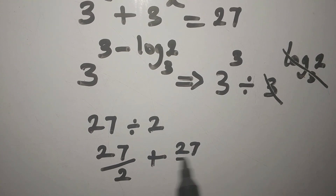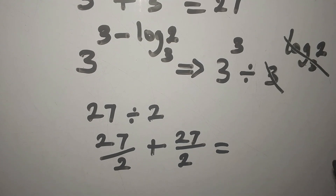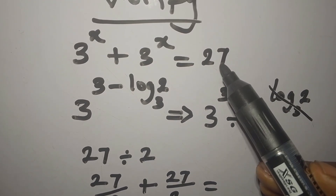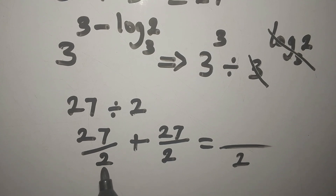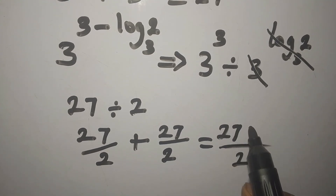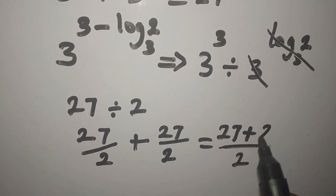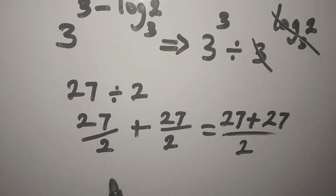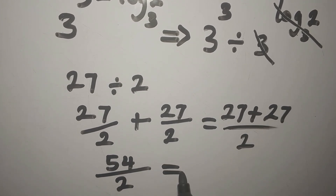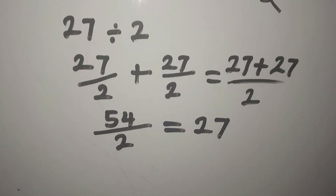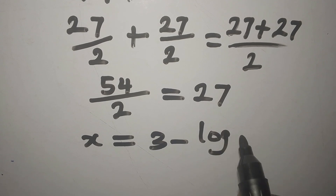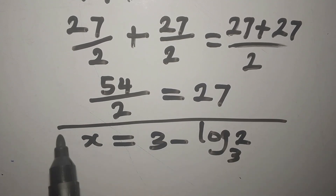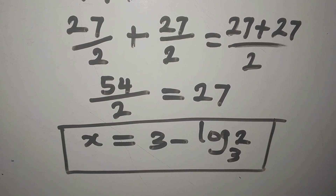For the next 3^x we have the same thing: 27 divided by 2. So we add them: 27/2 plus 27/2. The LCM of 2 and 2 is 2, so we get (27 + 27)/2 = 54/2 = 27. This confirms our answer. We have verified that x equals 3 minus log₃2. Thank you for watching.